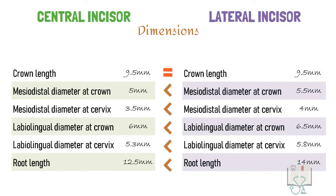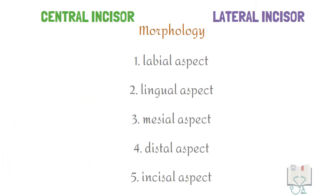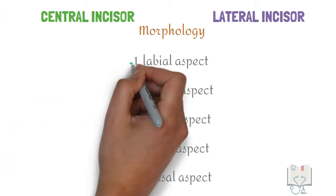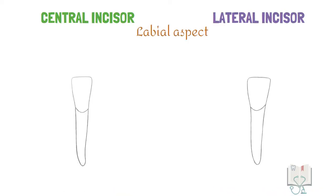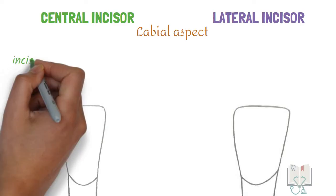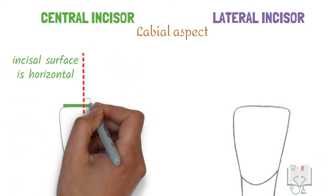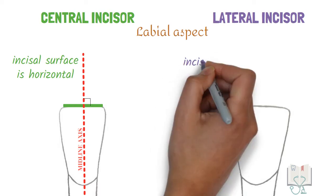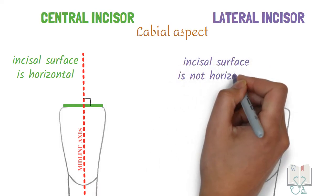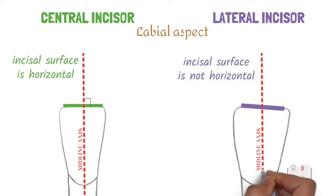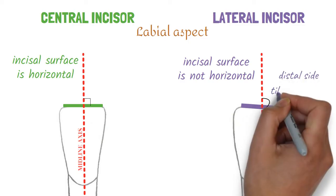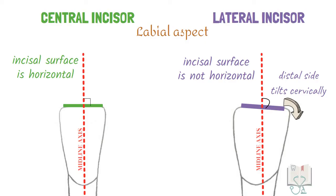Now let us study the differences in morphology from each aspect, starting with the labial aspect. The outline form of the crown is trapezoidal in both teeth. In the mandibular central incisor, the incisal surface is horizontal so that it is perpendicular to the midline axis. Whereas in the lateral incisor, the incisal surface is not horizontal and so it is at an angle to the midline axis, as the distal side of the surface tilts cervically.